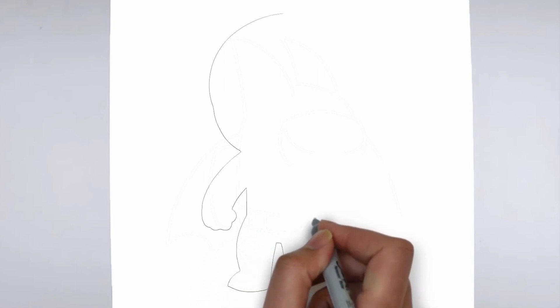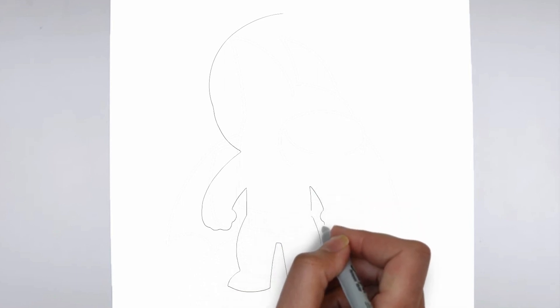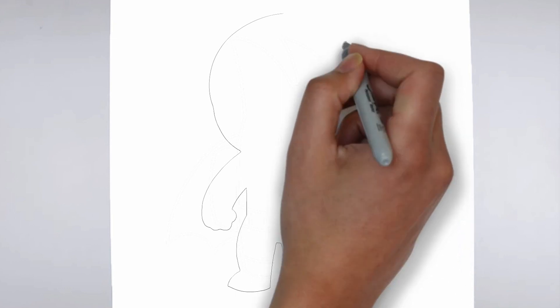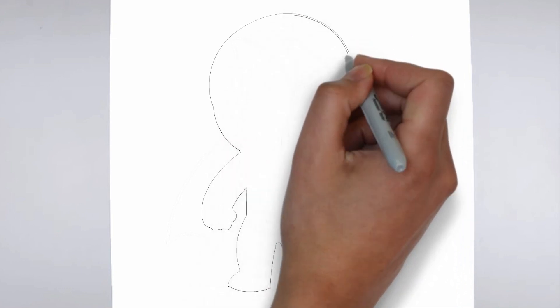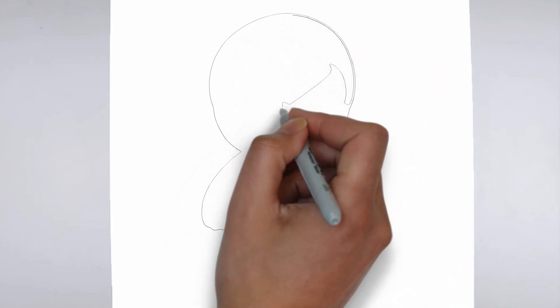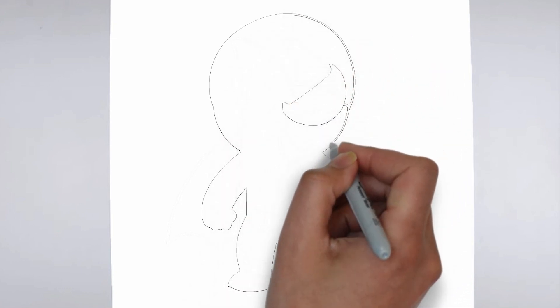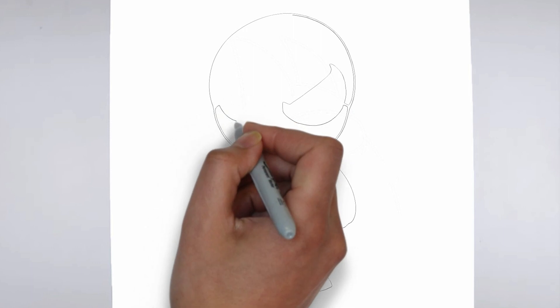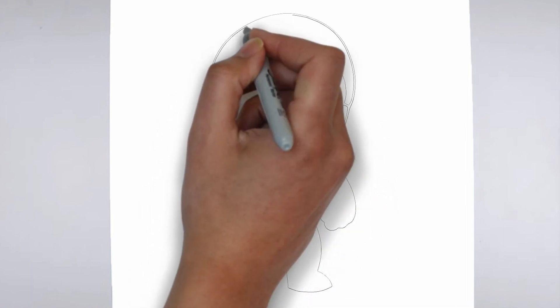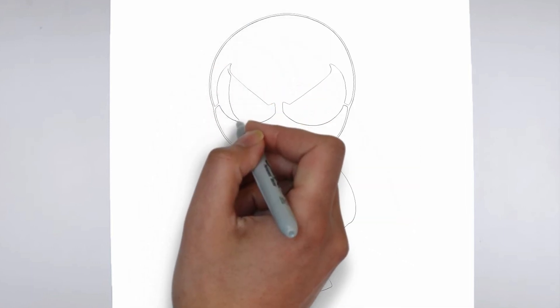First, we'll begin by sketching the basic shape of our subject. Make light strokes to establish the overall form and proportion. Don't worry about details at this stage — just focus on getting the basic shape right.